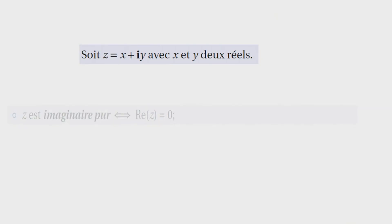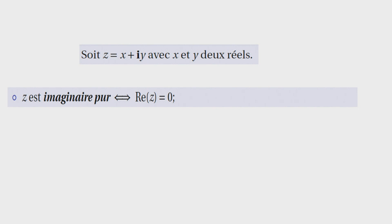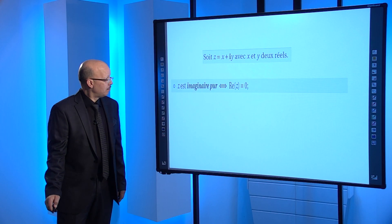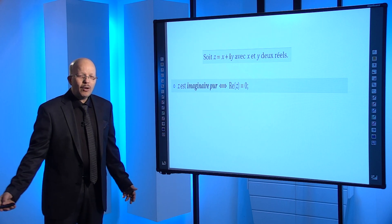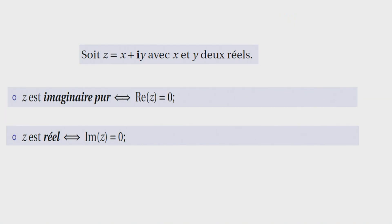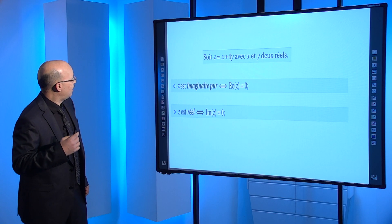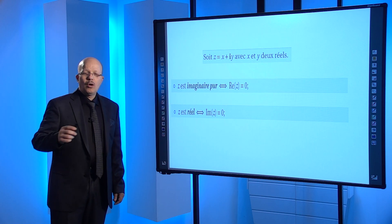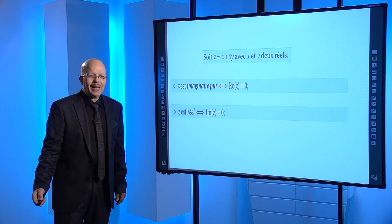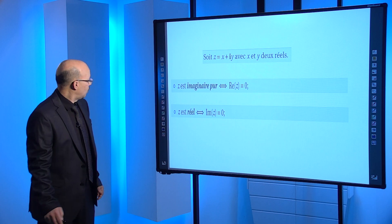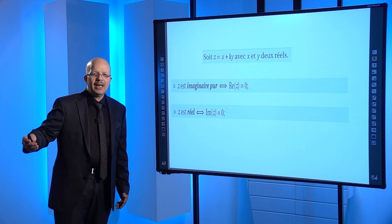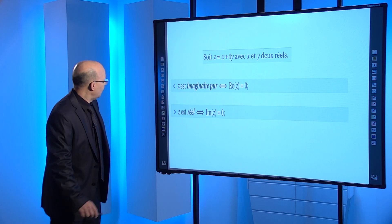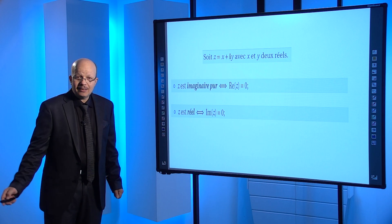Si z = x+iy, on dit que z est imaginaire pur si et seulement si la partie réelle est égale à zéro. Par exemple, z = 2i, z = 3i, ou z = √2·i sont des nombres imaginaires purs. On dit que z est réel si et seulement si la partie imaginaire est égale à zéro, c'est-à-dire s'écrit de la forme z = x. On peut conclure que l'ensemble ℝ est inclus dans ℂ.